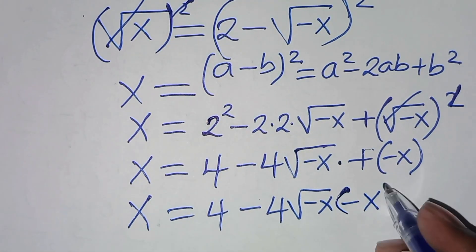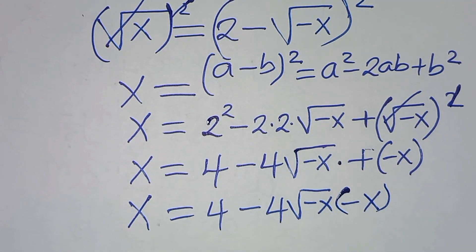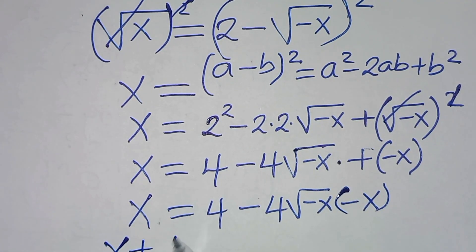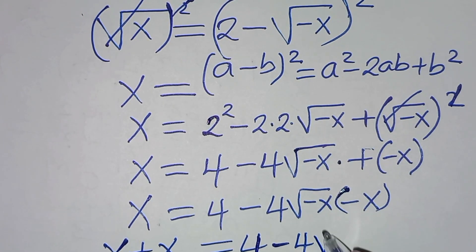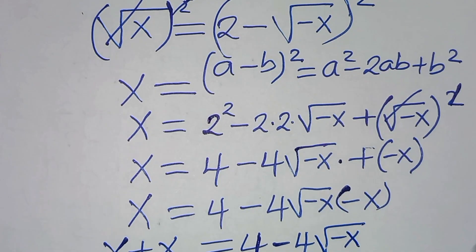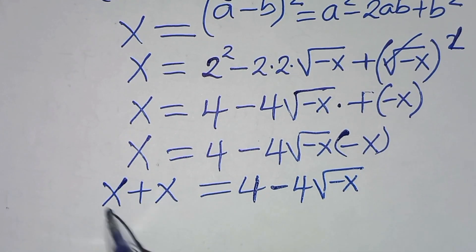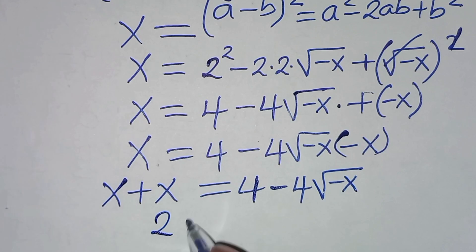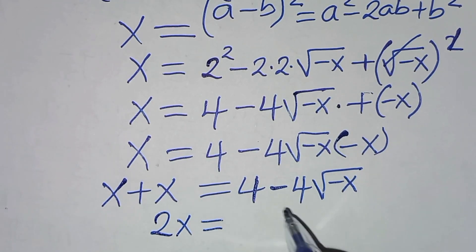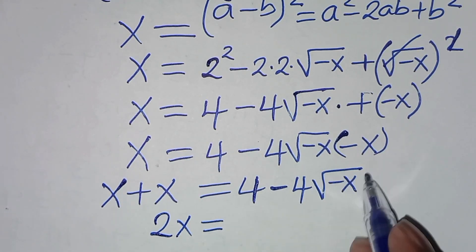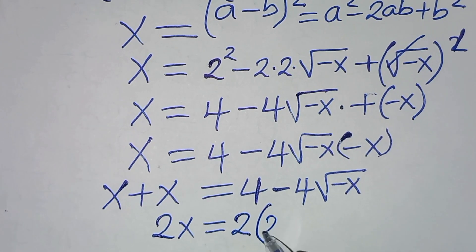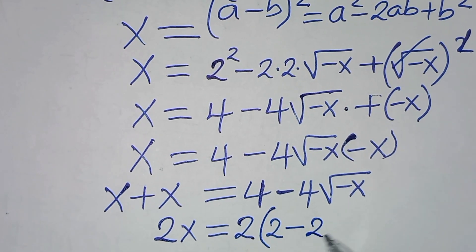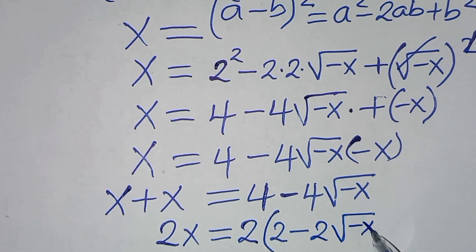Let's take the minus x to the left hand side so that we have x plus x equals 4 minus 4 square root of minus x. Now x plus x is 2x, so we have 2x equals 4 minus 4 square root of minus x. We can factor out 2 to get 2 times the quantity x equals 2 minus 2 square root of minus x.